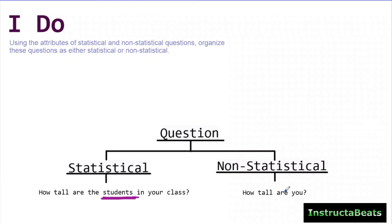For 'how tall are you,' you are going to have to collect data — you might have to go measure yourself — but you're not surveying a population of people or a group of things that's going to give you that natural variation. So here we have a really good example of two questions that are similar, both asking about height, but one is a statistical question and one is a non-statistical question.